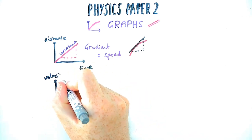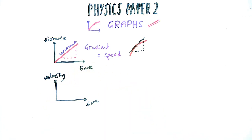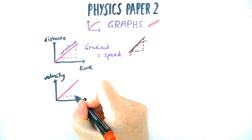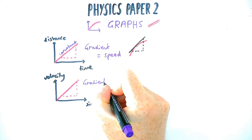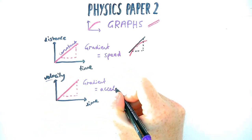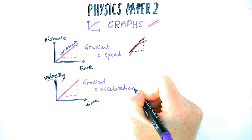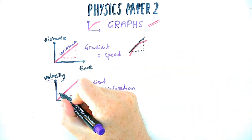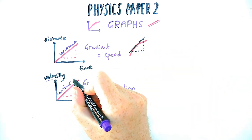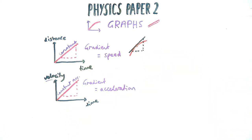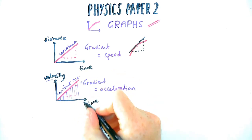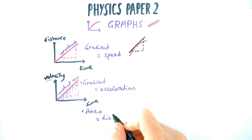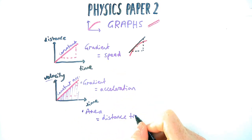You need to be careful with these questions, because if it's velocity on the y-axis, then the gradient doesn't represent speed — it represents acceleration. So in this case it's a straight line, so the acceleration is constant. However it could be curved as well — you'd draw a tangent just like previously. Also, from a velocity-time graph, the area underneath the graph is equal to the distance travelled.